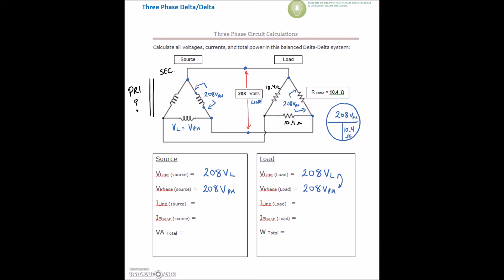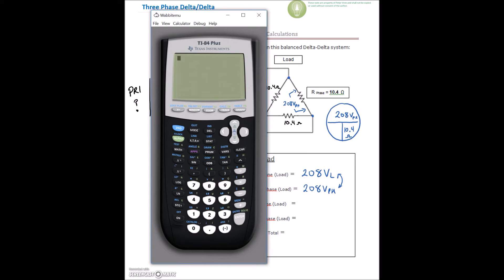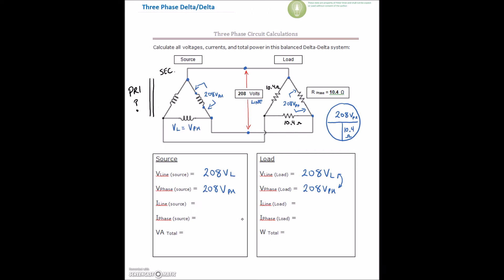So we've got 208 divided by 10.4. Let me just bring up the calculator here. You guys in my class always laugh when I say that math is not my strong point. Math is not my strong point. I can't do this in my head. So 208 divided by 10.4 gives me 20 amps.